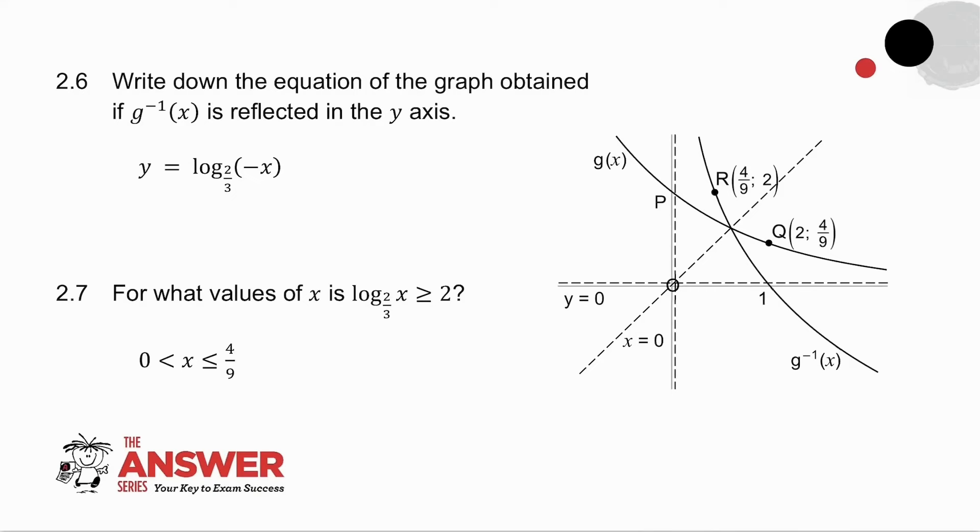2.6 asks you for the equation of the graph obtained if g to the minus 1 of x is reflected in the y-axis. So there's my y-axis. If I reflect a graph in the y-axis, what happens to it? Well, all your x values become minus x values. So my equation stays exactly the same except in place of x goes minus x. Now you might be thinking you can't take the log of a negative number. So how can I have log to the base 2 thirds of minus x?